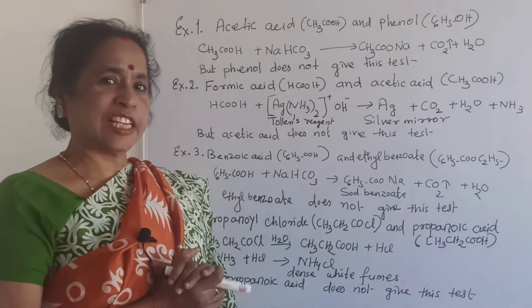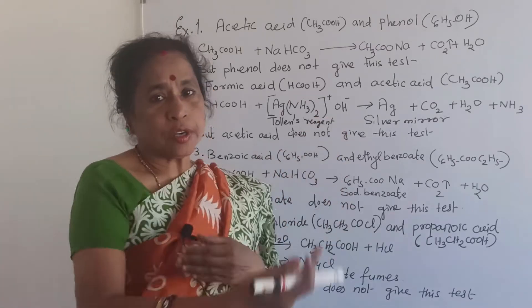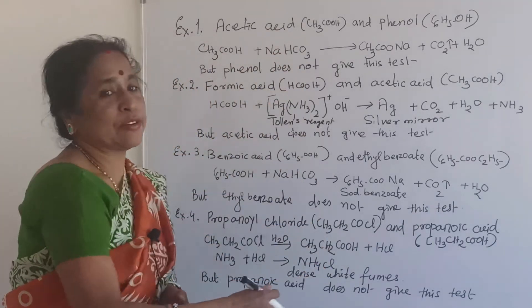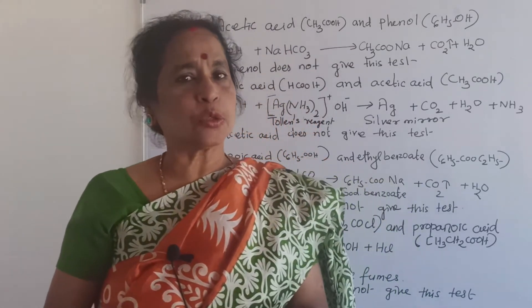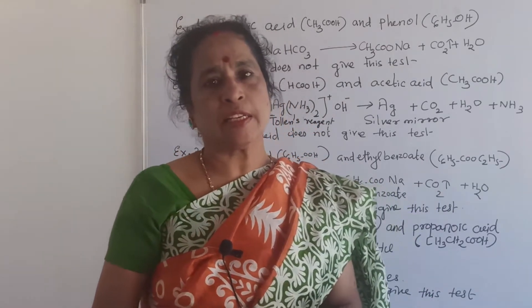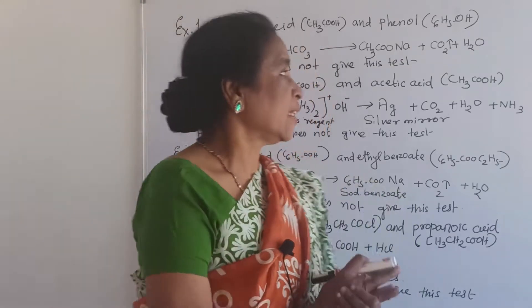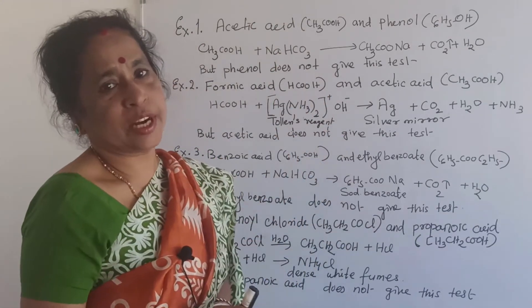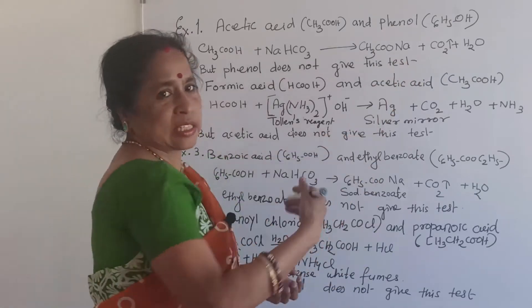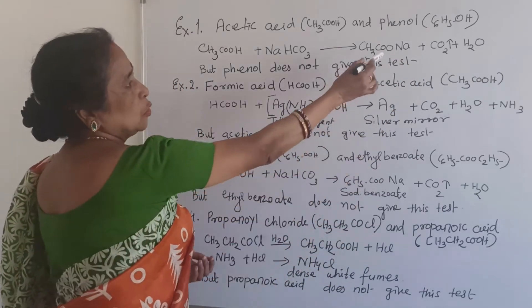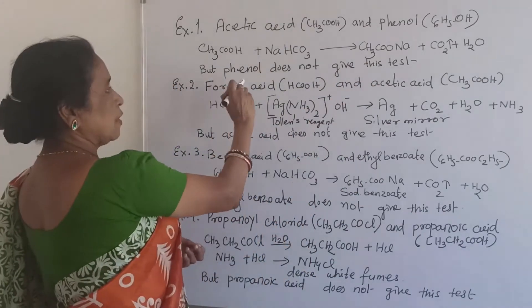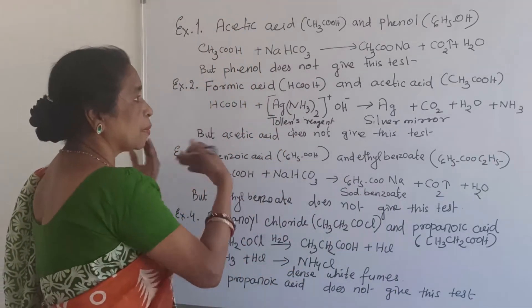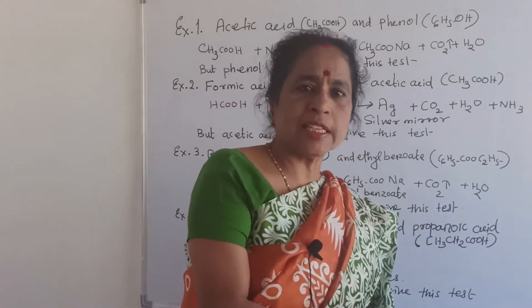Example 1: Acetic acid and phenol. Acids react with sodium hydrogen carbonate producing carbon dioxide — effervescence takes place. You take acetic acid in a test tube, add sodium hydrogen carbonate, effervescence takes place, and carbon dioxide is the main product along with sodium acetate and water. Phenol does not give this test — phenol will never react with sodium hydrogen carbonate.